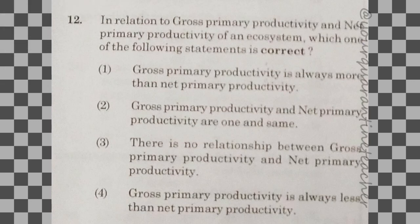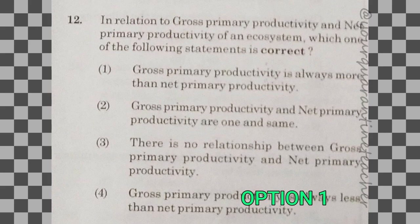12th question: in relation to gross primary productivity and net primary productivity of an ecosystem, which one of the following statements is correct? The answer is option 1 — gross primary productivity is always more than net primary productivity.